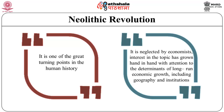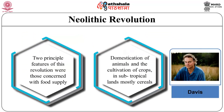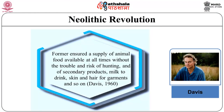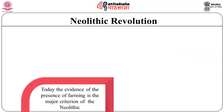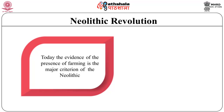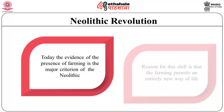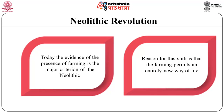The two principal features of this revolution were those concerned with the food supply: the domestication of animals and the cultivation of crops — in subtropical land, mostly cereals. The farmer ensured a supply of animal food available at all times without the trouble and risk of hunting, and also benefited from secondary products such as milk, skin, and hair for garments. Today, evidence of farming is the major criteria of the Neolithic.